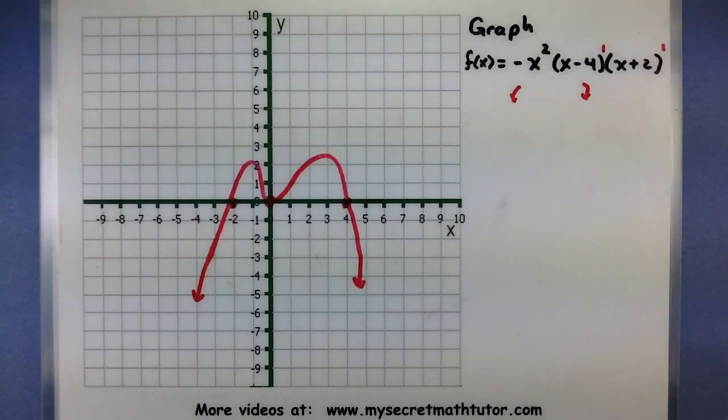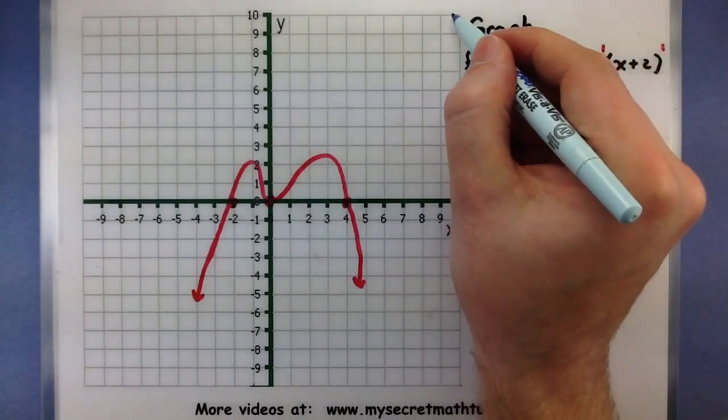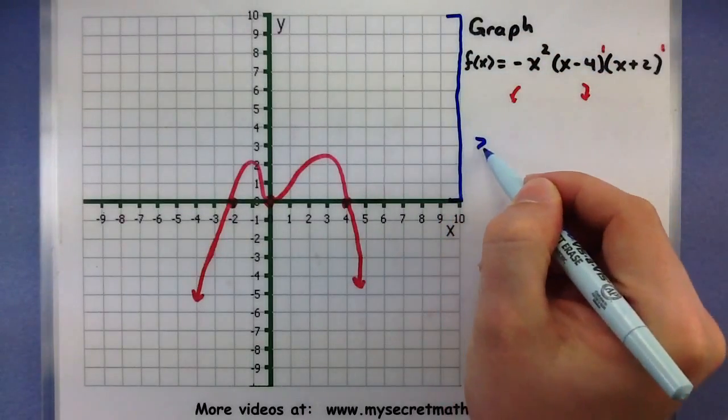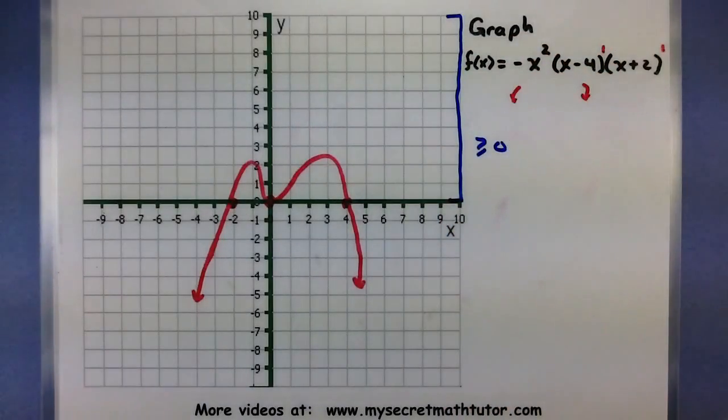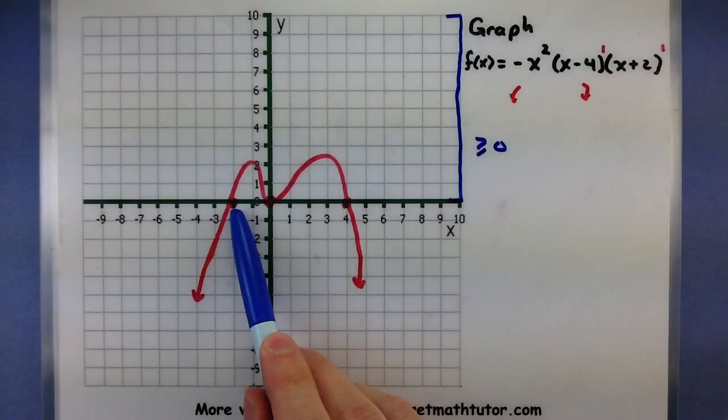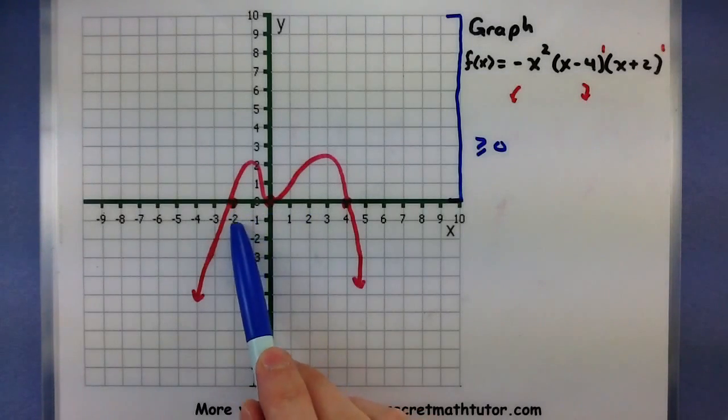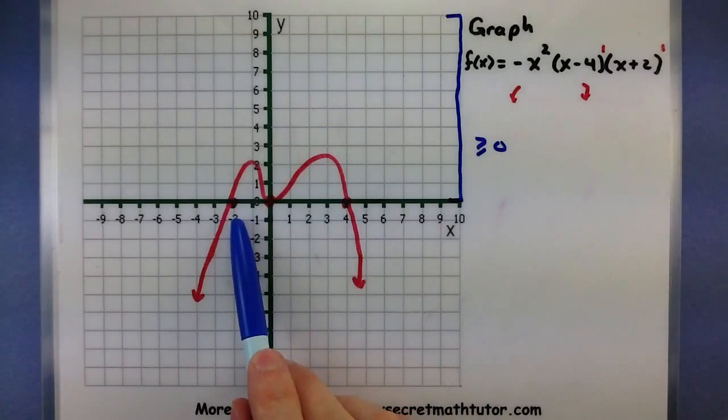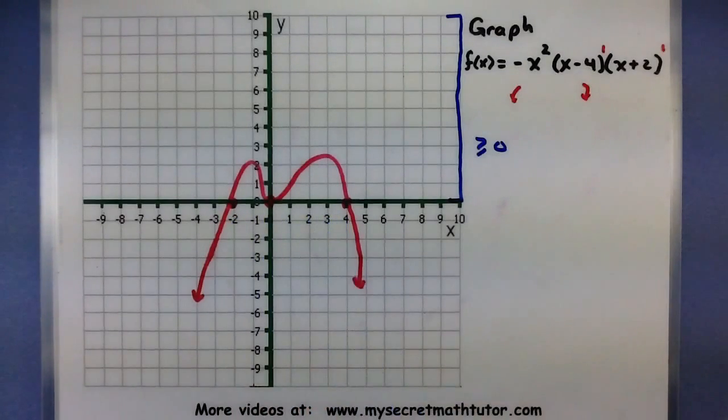Alright, now that we have a nice rough sketch of this thing, I want to figure out where is my polynomial greater than or equal to 0. So for the greater than or equal to part, we'll be looking at the upper half of our graph. So it looks like it's definitely greater than or equal to 0, anywhere between negative 2 all the way up to 4. It's also equal to 0 at negative 2, 0, and 4.